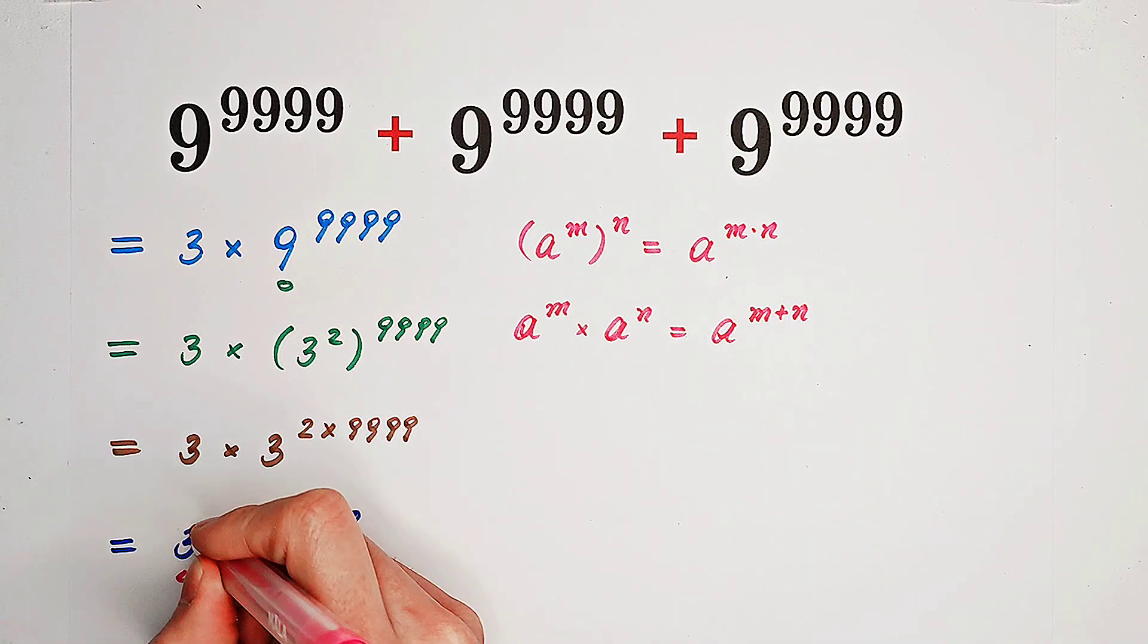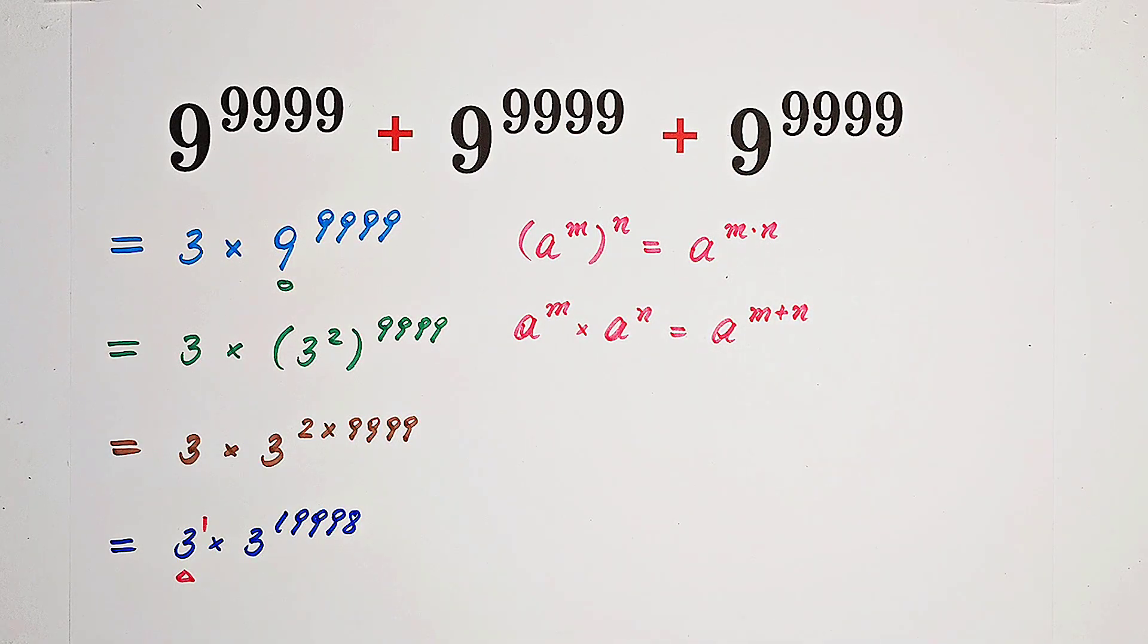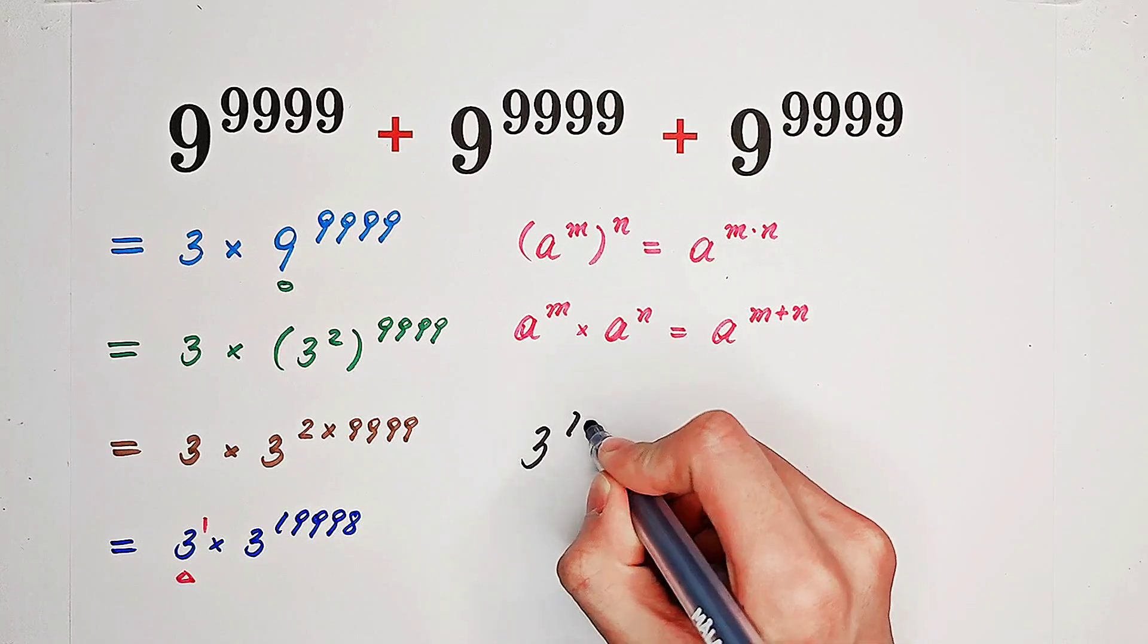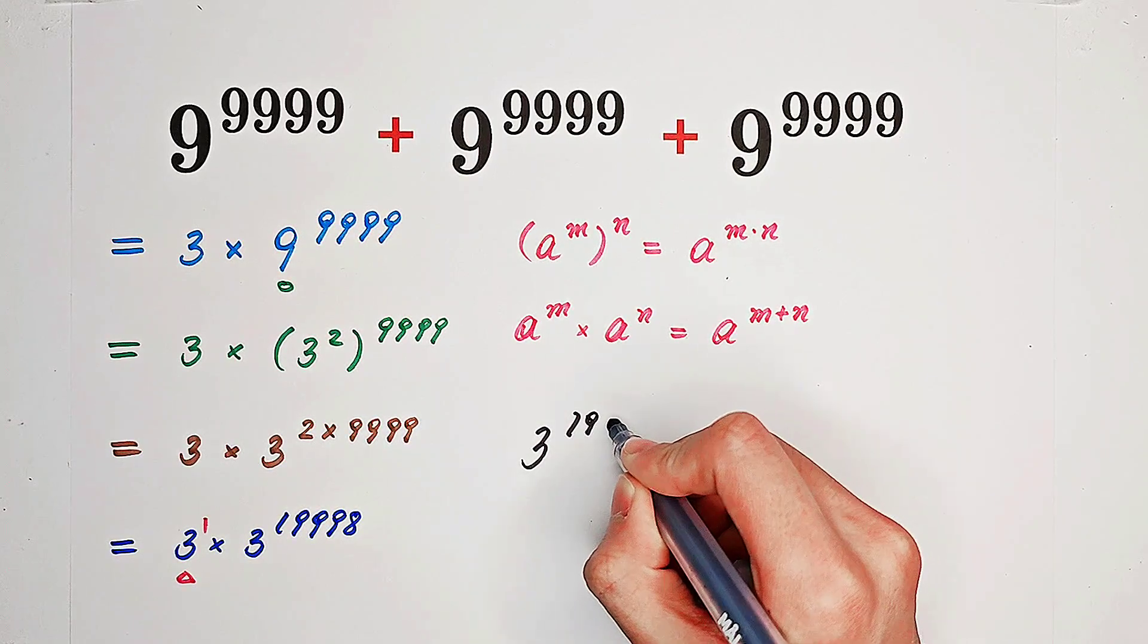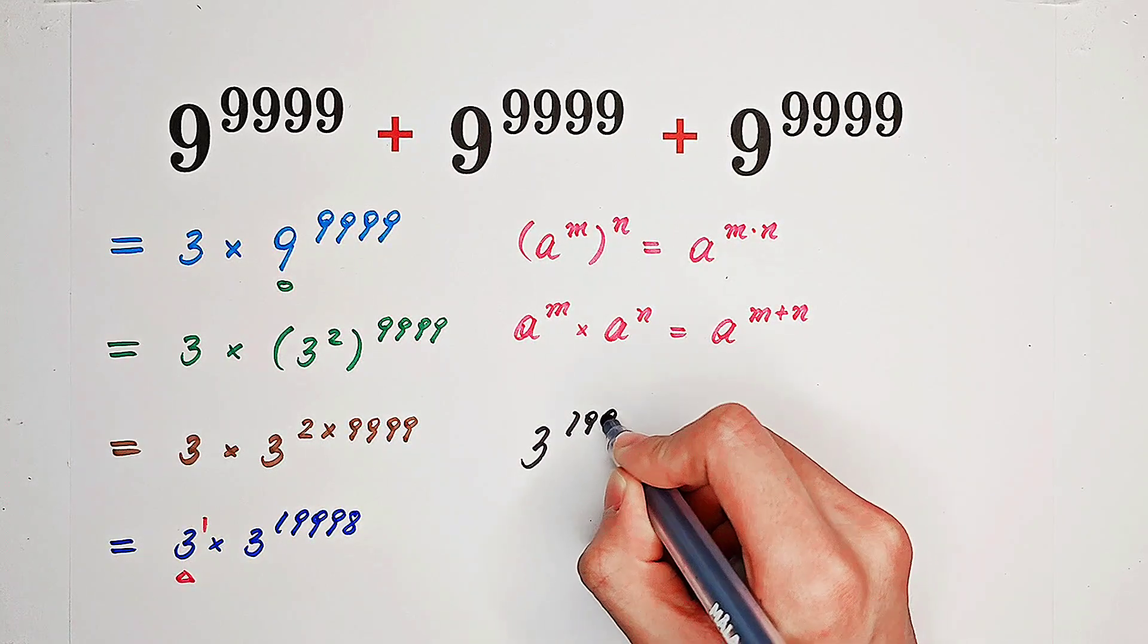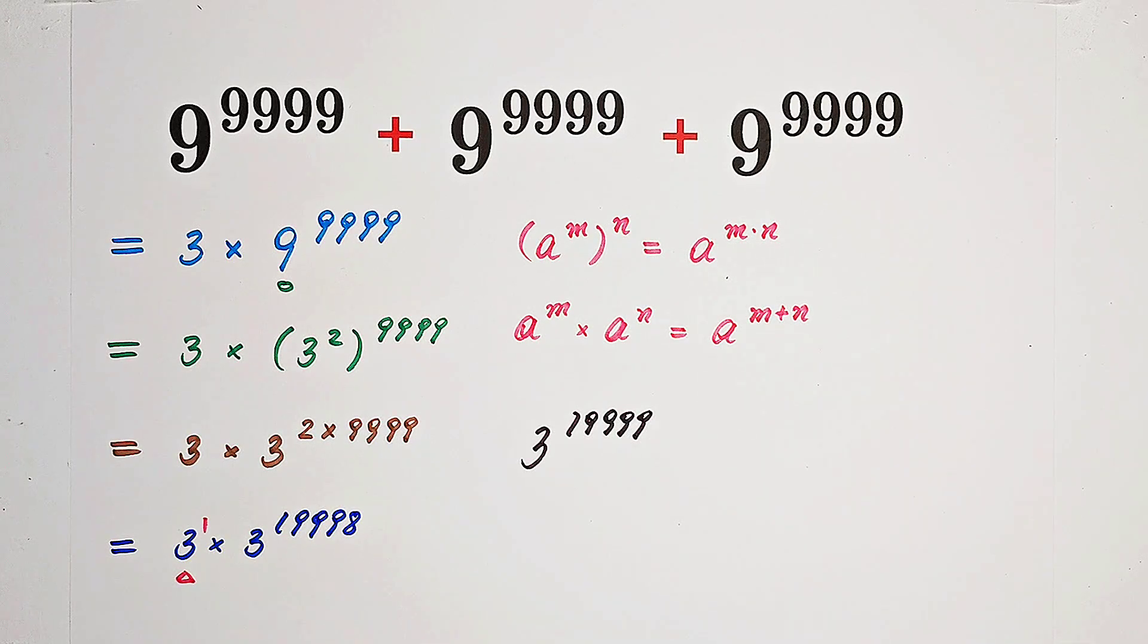Now you'll see 3 is just 3 to the power of 1. So 3 to the power of 1 times 3 to the power of 19,998 is 3 to the power of 19,998 plus 1, which is 19,999, and that's the answer.